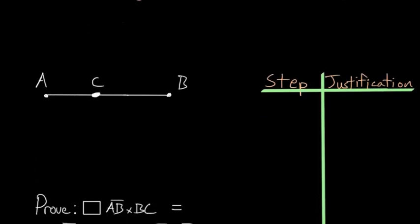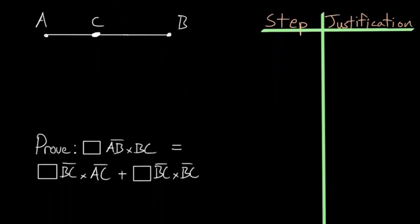So essentially, if we start with some line, line AB in this case, and we cut it randomly at C, then what this proof is saying is that if we took a rectangle formed by AB and one of the segments, let's say segment BC...